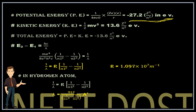Kinetic energy KE = (1/2)mv² = 13.6 z²/n² electron volts, and total energy is the sum of potential and kinetic energy, which equals −13.6 z²/n² in electron volts.